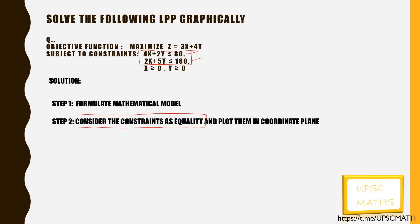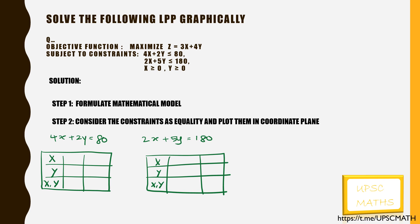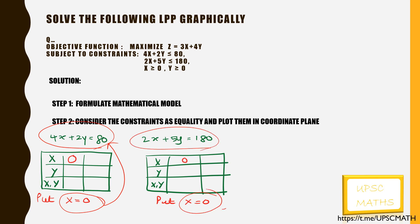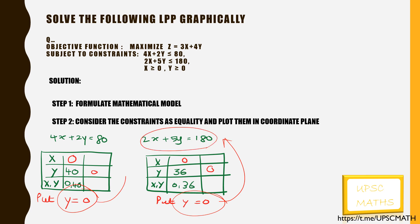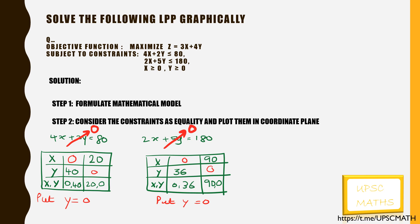We have to consider the constraints as equality. To find the coordinate points, I will draw a table. Put x equal to 0 in the above equations — you will get the value of y as 40 and 36, so the coordinate points become (0, 40) and (0, 36). Then put y equal to 0 to find the value of x — I get x as 20 and 90, so the coordinate points become (20, 0) and (90, 0). These points represent the coordinate points of each line.